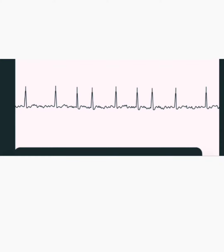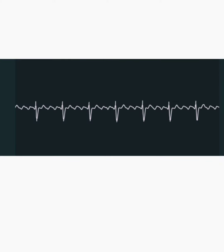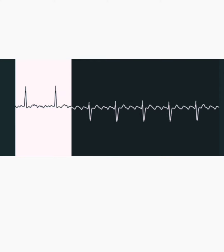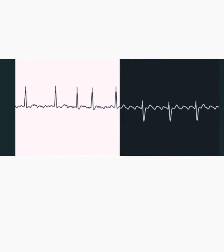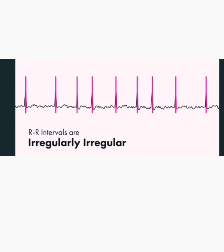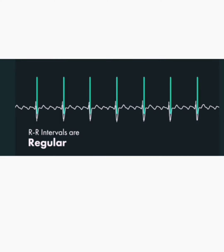Atrial fibrillation versus atrial flutter: a bright strip shows atrial fibrillation and a right-sided black strip shows atrial flutter. As you can see, RR intervals are irregularly irregular in atrial fibrillation, while RR intervals are regular in atrial flutter.